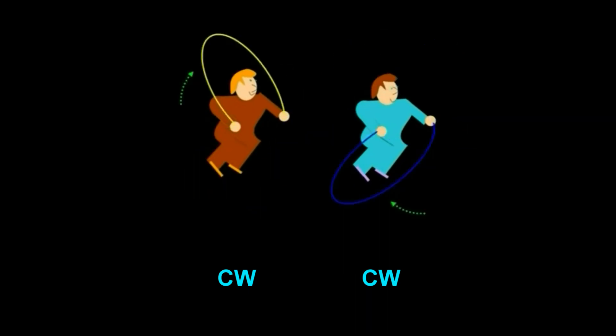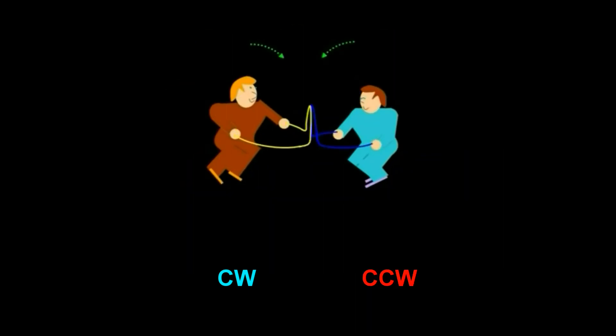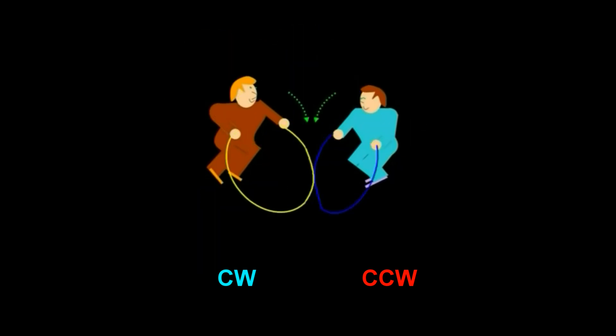Rod now turns around and faces Axel. Their jump ropes now clash and push each other away. Let's now extrapolate these mechanisms to magnets.